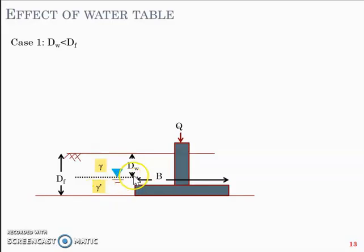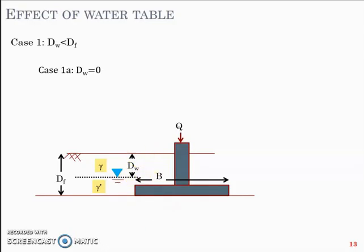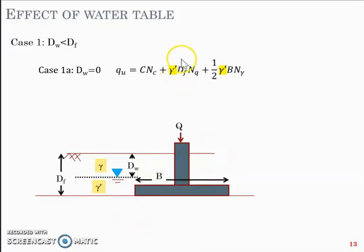When dw equals zero, the water table is at the ground level, and when dw equals df, the water table is at the foundation level. For the first case where dw equals zero — water table at ground level — the soil below ground is completely saturated, so we accommodate gamma dash in both terms: c·Nc + gamma_dash·df·Nq + half·gamma_dash·B·N_gamma.